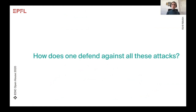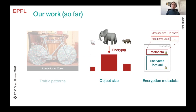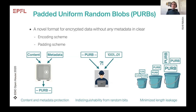So the question is, how do we protect ourselves against all these attacks? In our lab, we focused on eliminating the last two sources of metadata leakage: object sizes and encryption metadata. To do so, we designed a new format for ciphertext — for encrypted data — which doesn't have any metadata in clear. We call it Padded Uniform Random Blobs (PURBs).